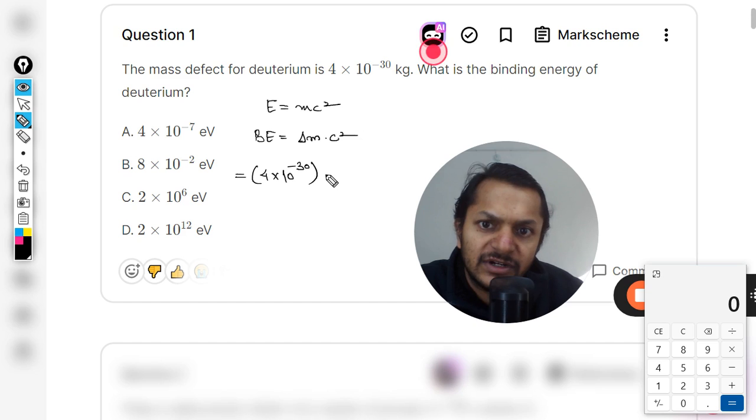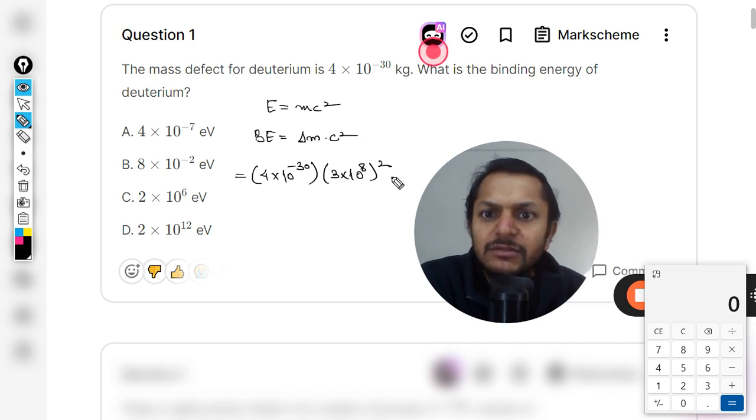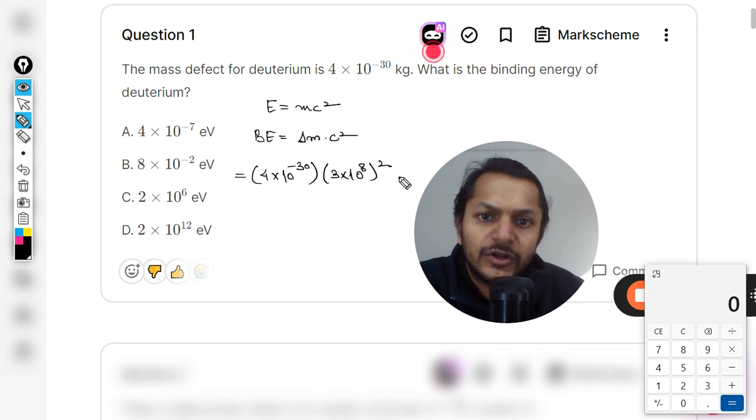...into c is 3 × 10^8 squared. So everything is in SI units. The mass is in kg and the speed is in meter per second, so for the energy the unit will be joule.